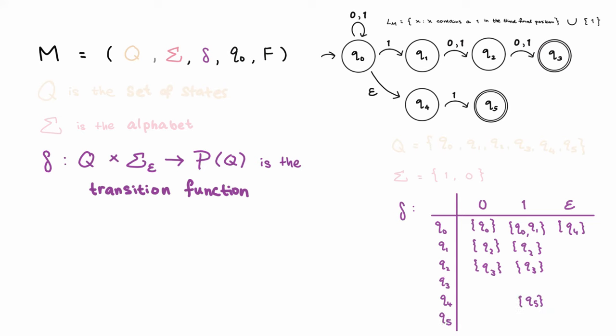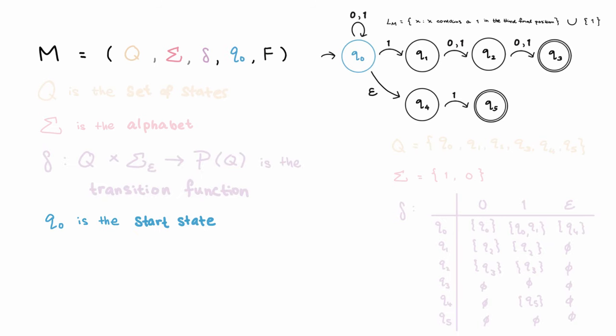Finally, for the states and symbols that have no transitions, the transition function will just result in the empty set. Q0 is the start state. And finally, F is the set of accept states, also known as final states, which in this case is the set containing Q3 and Q5.